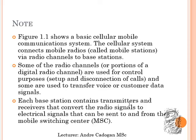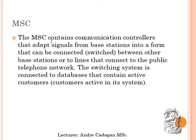Each base station contains transmitters and receivers that convert radio signals to electrical signals that can be sent from the mobile switching center onto the PSTN network. The mobile switching center contains communication controllers that adapt signals from base stations into a form that can be connected or switched — essentially acting as a router. The switching system is also connected to a database containing active customer and user information, because you cannot make a call without connecting to those databases.